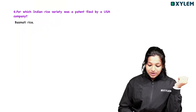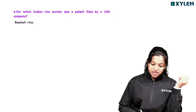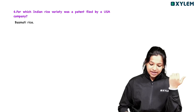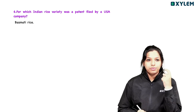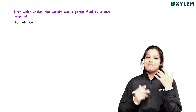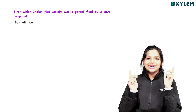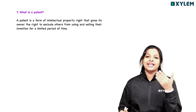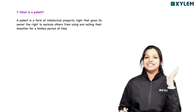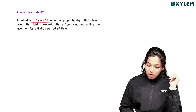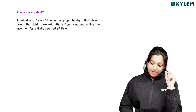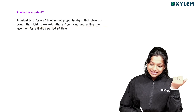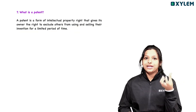Question six: For which rice variety was a patent filed by a USA company? A patent is a form of intellectual property right that gives its owner the right to exclude others from using and selling their invention for a limited period of time.